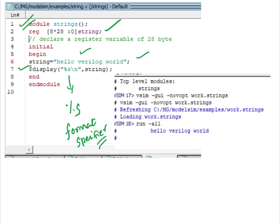For example, to display binary data, this is the format specifier: %b. To display decimal data: %d. To display float data: %f. These are called format specifiers. And this is the output. If you write this code in any simulator like Xilinx or ModelSim, then you will get this output: 'Hello Verilog world.' This is the string.